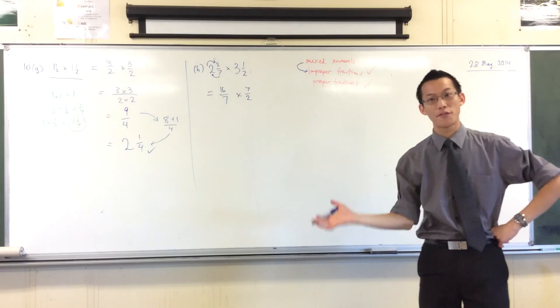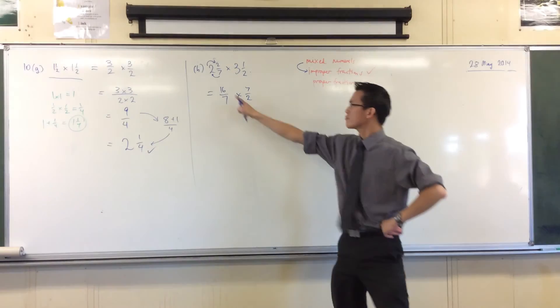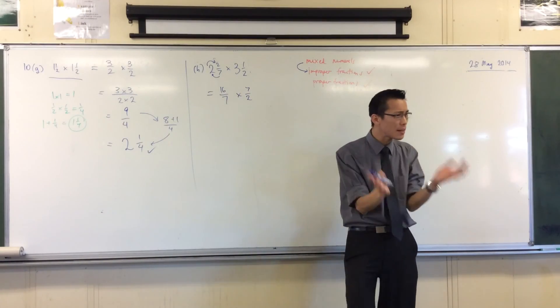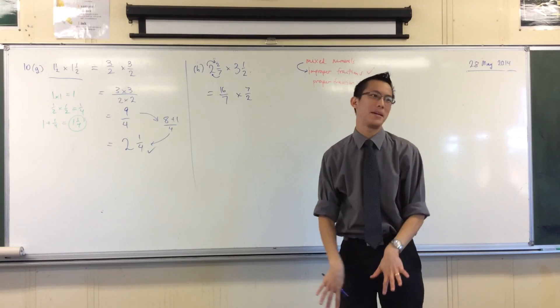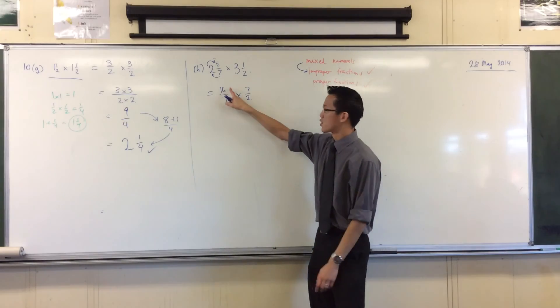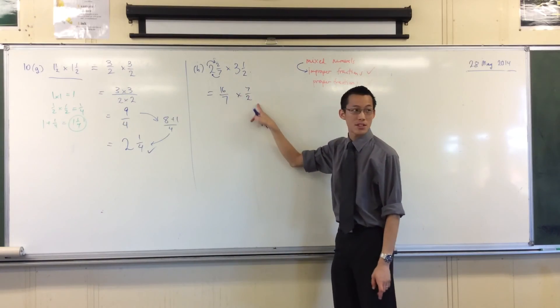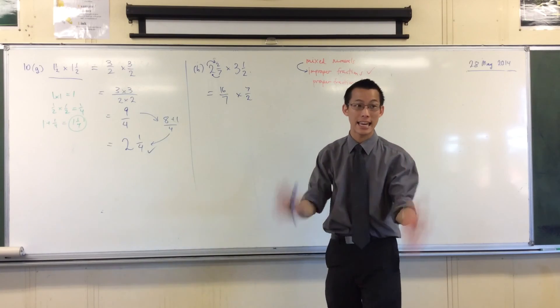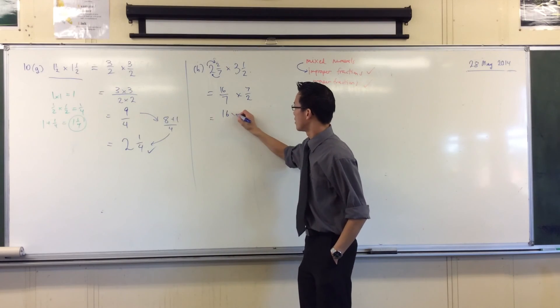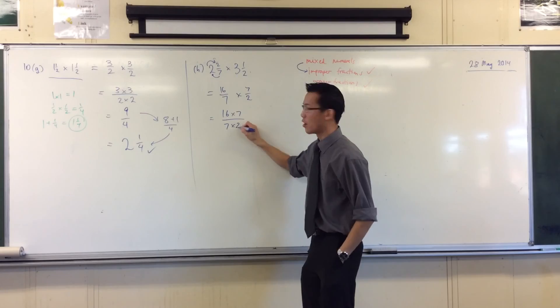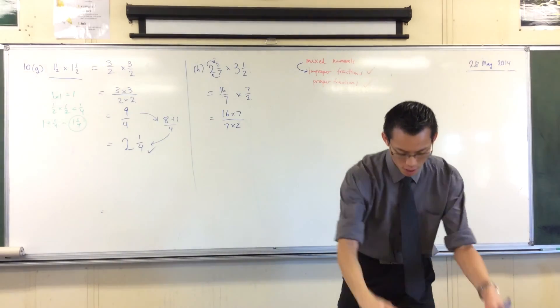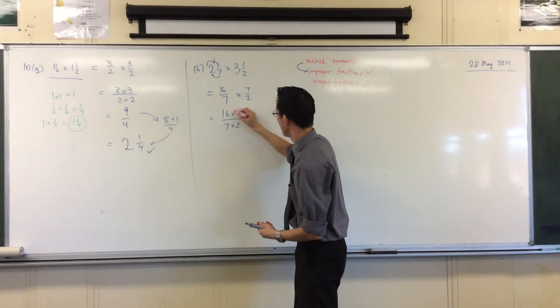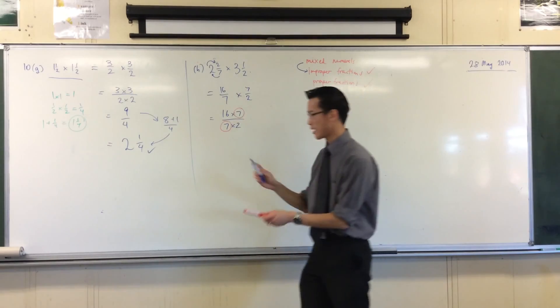Now, this is a good example to follow up with because we could multiply across, but you've seen before, we want to avoid big numbers, right? So rather than 16 times 7 and 7 times 2, I'm going to notice I can cancel, right? If there's a 7 on the top and a 7 on the bottom, I can get rid of both of them, right? This guy and this guy, they will vanish.